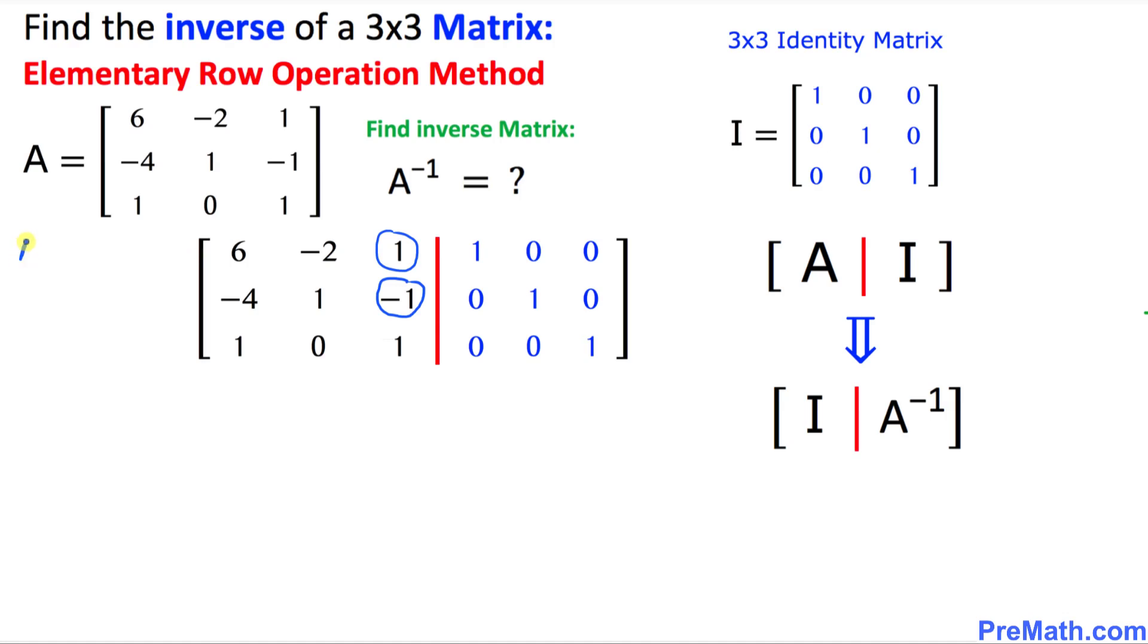I will be putting down row 1 minus row 3 and make sure that I put down the answer in row 1. Likewise I am going to put down row 2 plus row 3 and once again the answer is going to go to row 2.